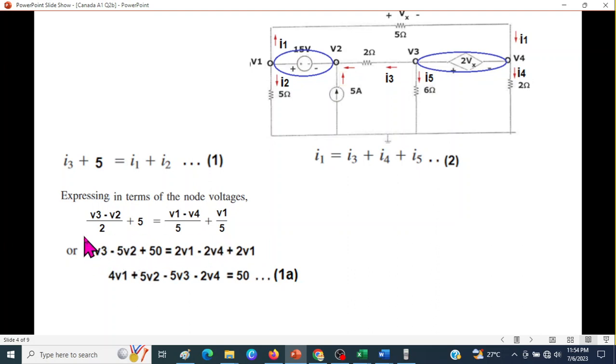This is the first node, first equation in terms of voltage, KCL equation, converted into voltage. And then we can simplify by multiplying by the LCM, which is 10. So, we multiply by 10. We get this. And we collect the like terms. So, this is our equation, 1A. From 1, I am just writing it, 1A.